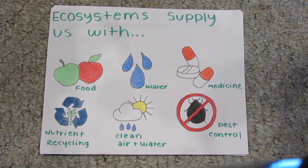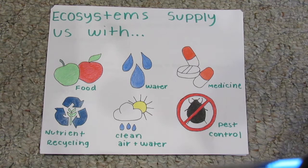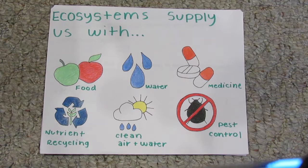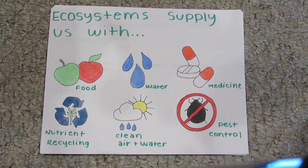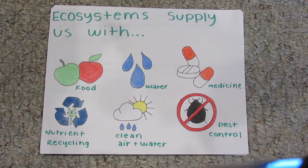Ecosystems are important to humans because they supply us with very important resources needed for survival, including providing us with food, water, and medicine. They regulate nutrient recycling and waste. They lock up carbon. They maintain clean air and water. They supply crop pollination, pest and disease control. They preserve genetic diversity and provide recreation for all of us. An ecosystem is important because it provides us with everyday items needed for our survival. When we destroy everything, we will no longer have these resources, making it hard to survive.